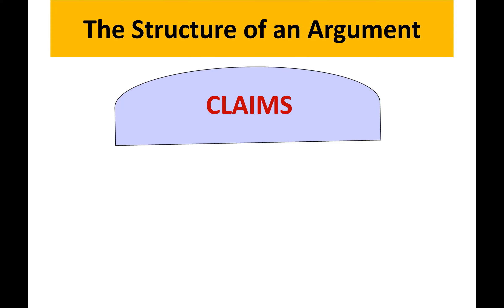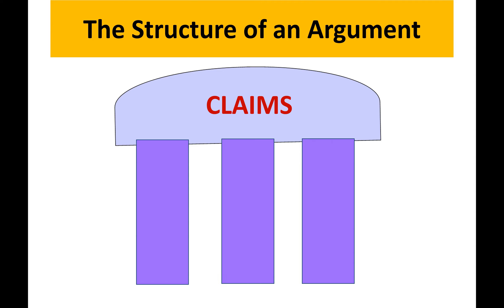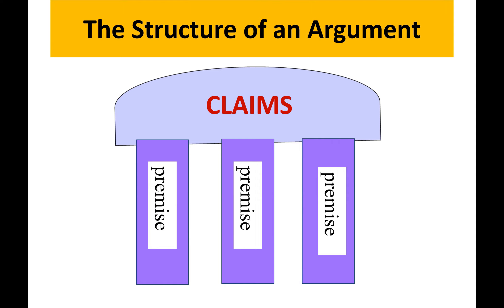This is the structure of an argument. You can look at it as a house. Your claim or your stand or your opinion will be the roof, and each of the supporting evidences will be your pillars, which are known as premises. So your claims will be the roof, the premises are each of the pillars — pillar 1 is reason 1, pillar 2 is reason 2, and pillar 3 is reason 3.